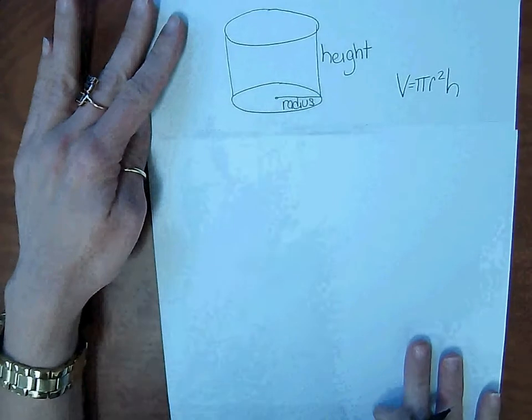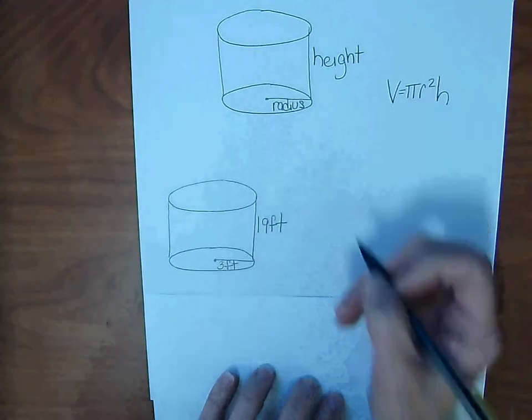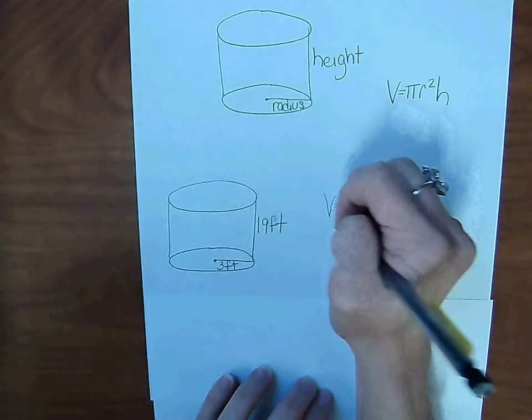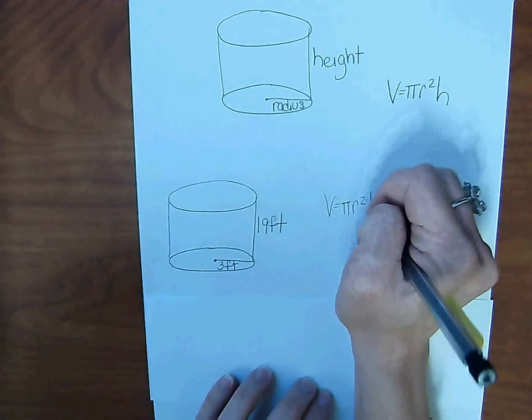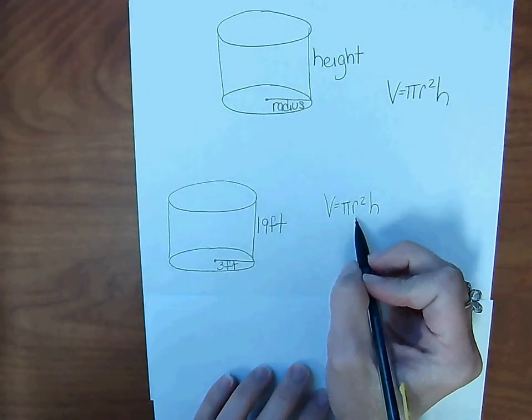So to find the volume of this cylinder, we want to first write the formula. Volume equals pi r squared h. The circle becomes full, or covered with water first, and then we multiply it by the height.